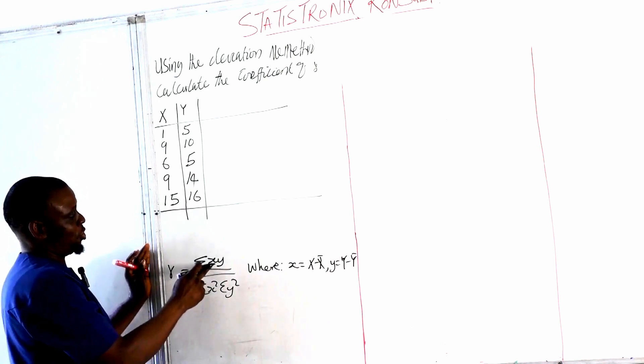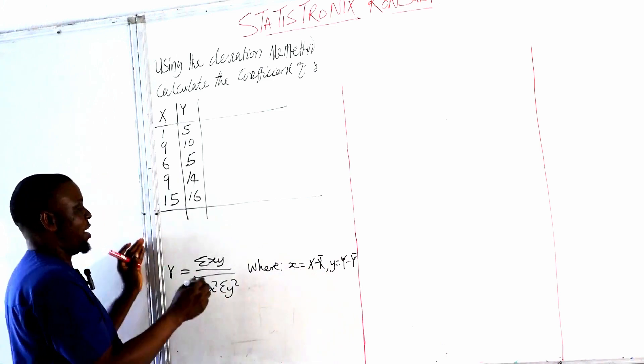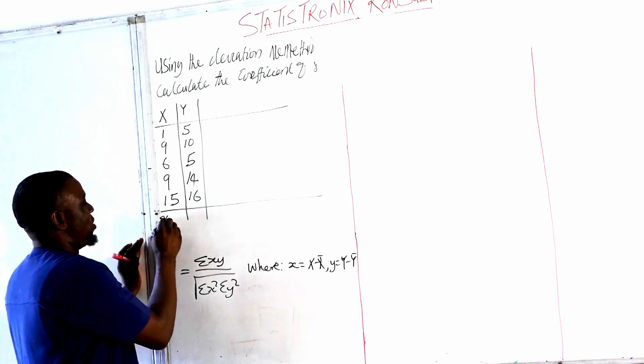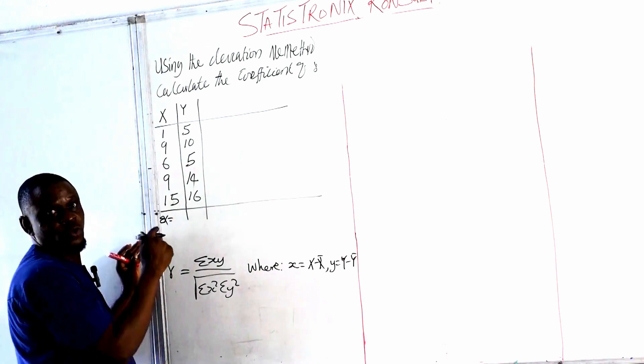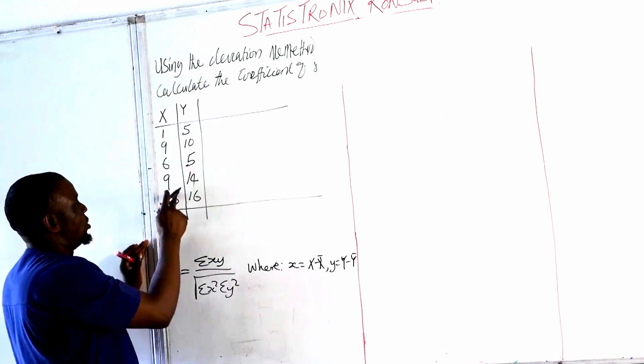So if we have this, then we are going to create columns based on the formula. So the first is small x. And for us to get small x, it will be X minus X̄. So it means we have to calculate our X̄. So X̄ will be summation of X. So what's the sum of X? The summation of X is 40.